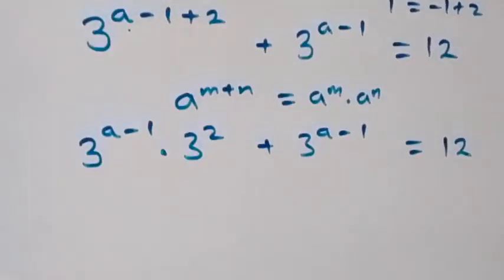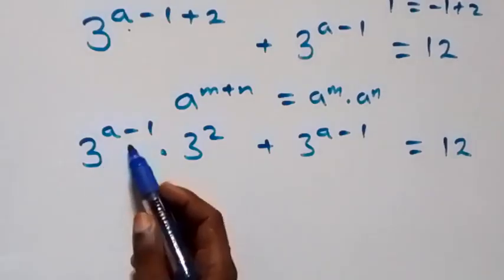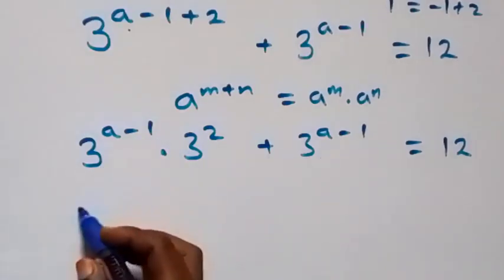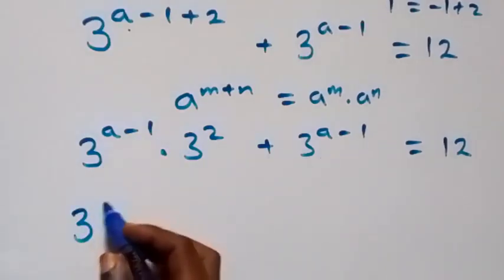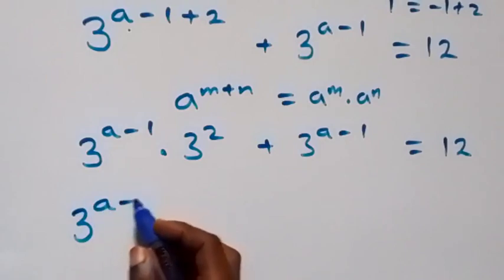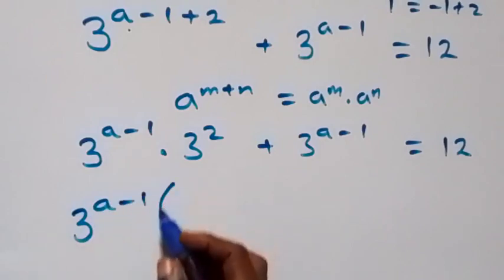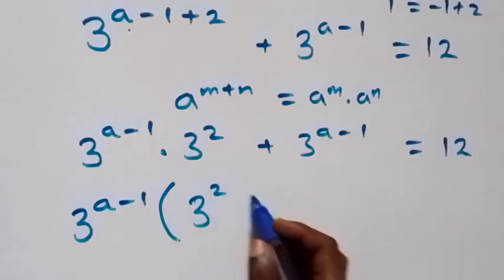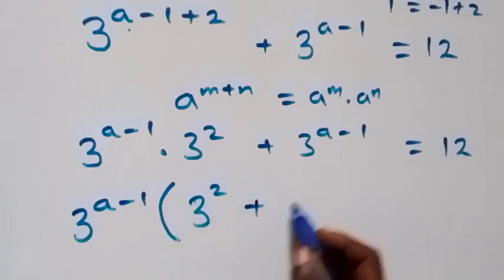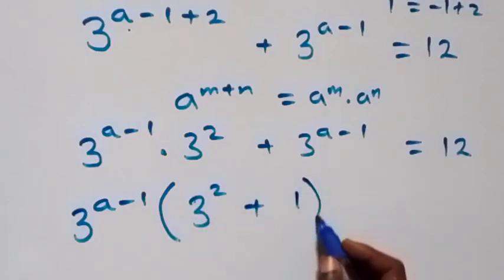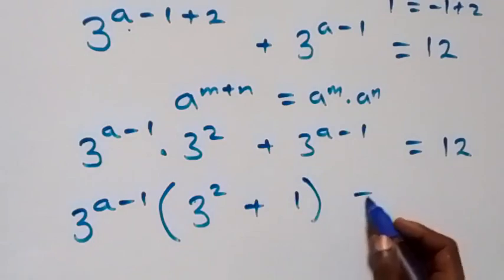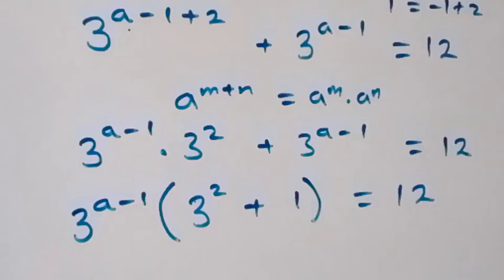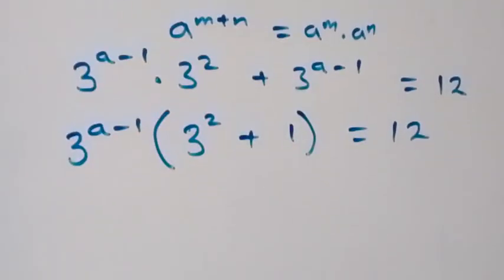The next step, we can factor 3 raised to power a minus 1 out. This becomes 3 raised to power a minus 1, into bracket we have 3 squared, then plus 1 left, which equals 12 on this side.